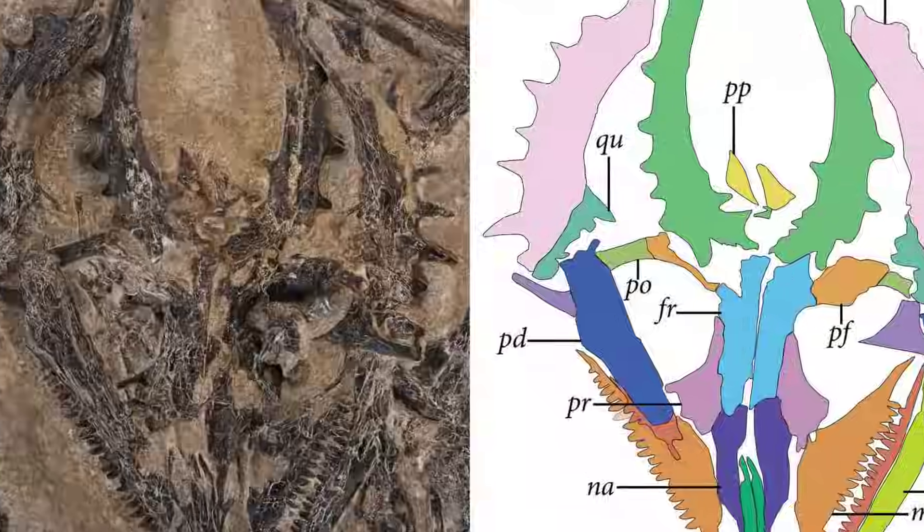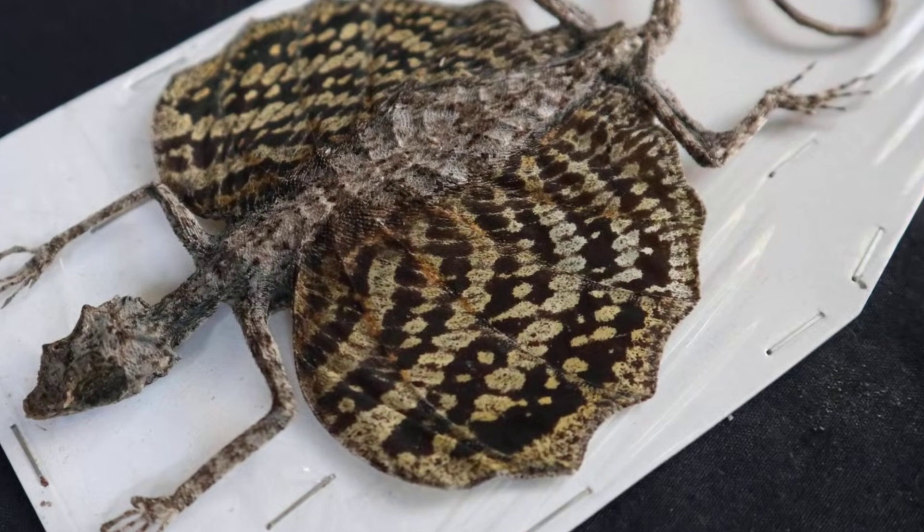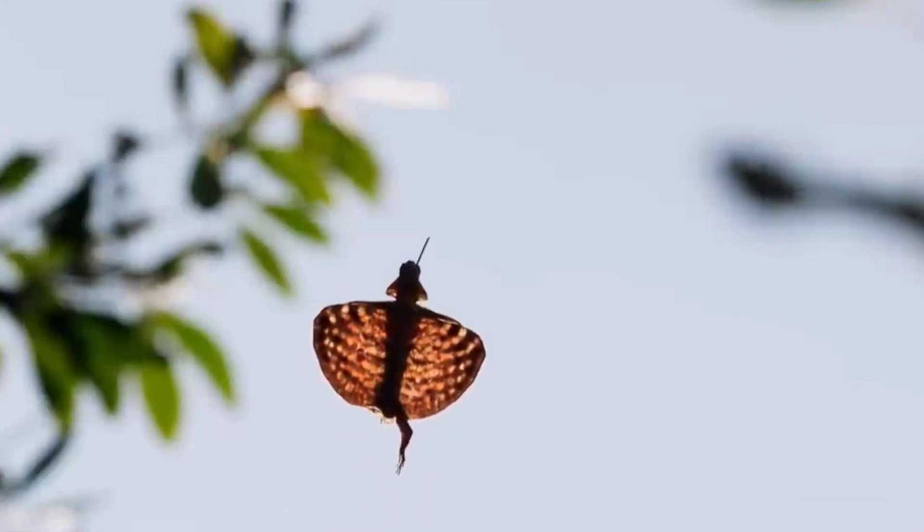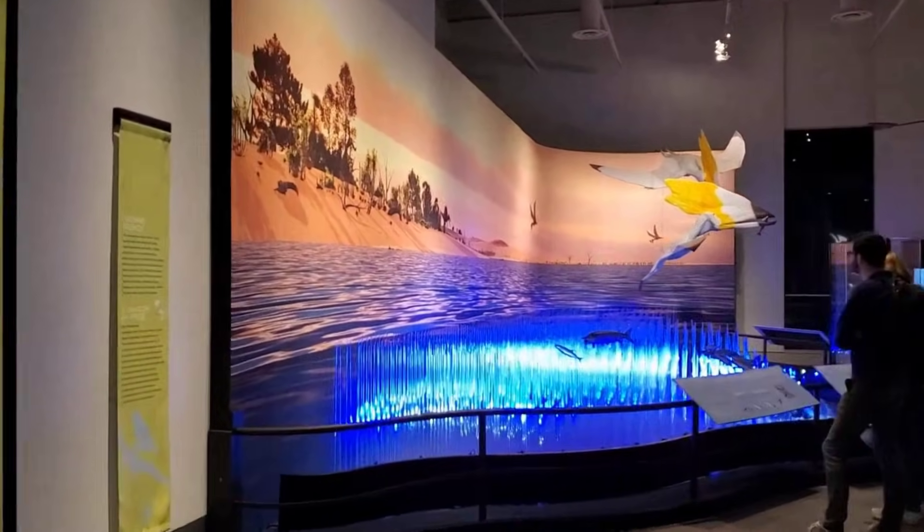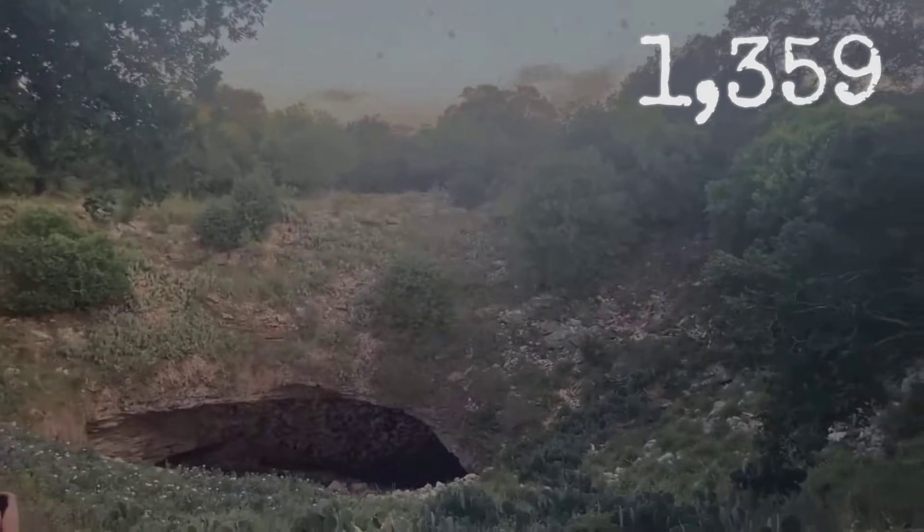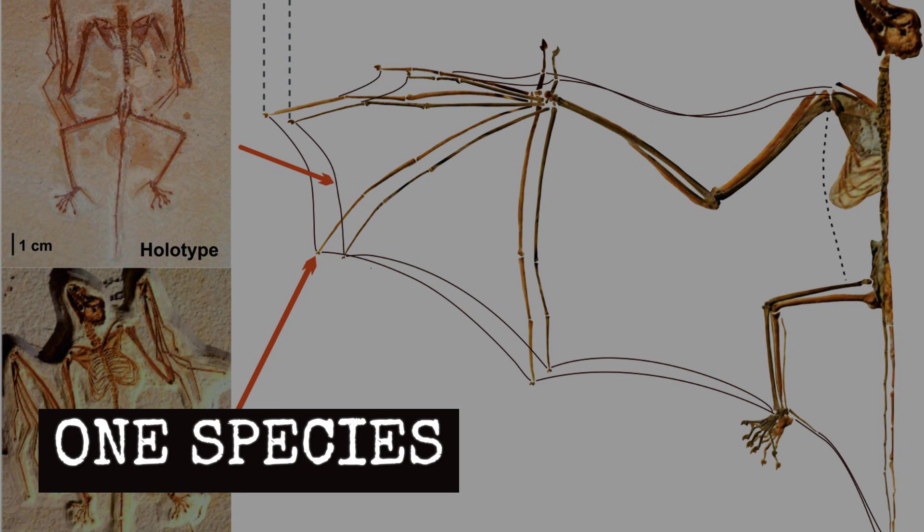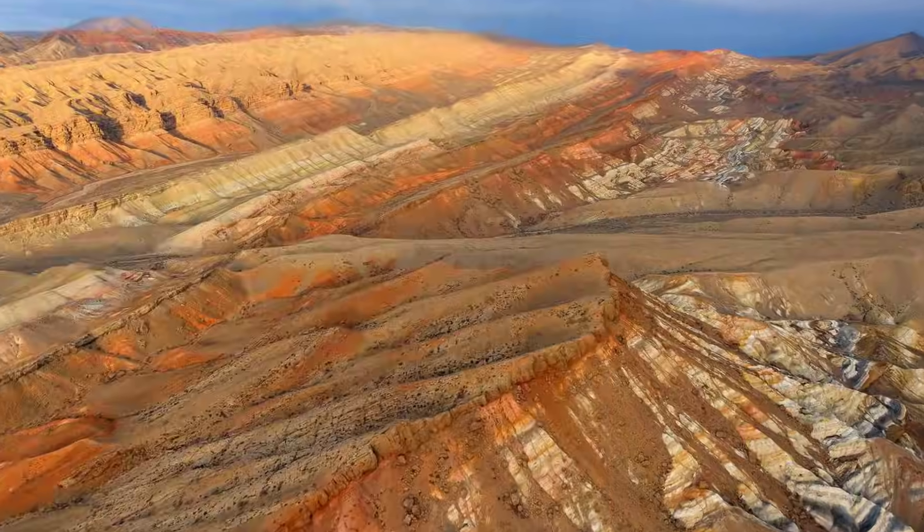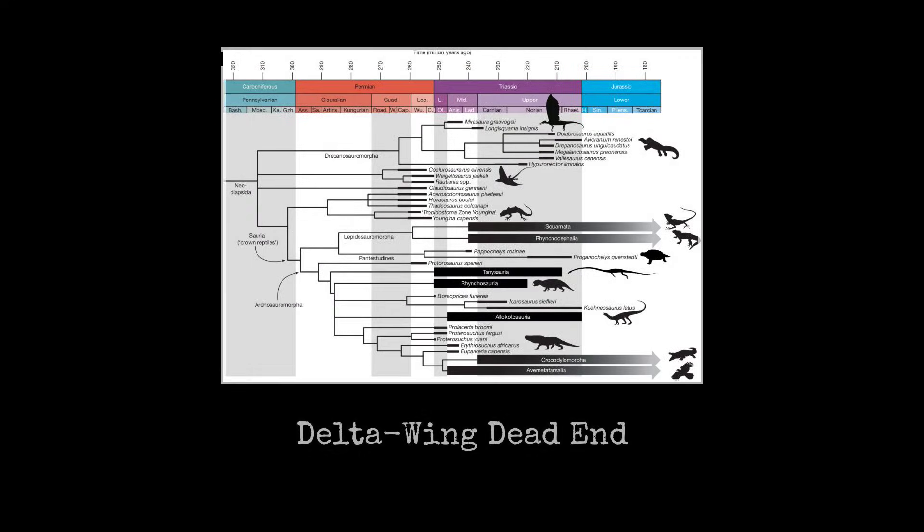The fossil record confirms this. One specimen ever found. Compare that to flying lizards like Draco: we have found hundreds of fossils, living species exist today, millions of years of success. Or consider pterosaurs: thousands of fossils and dozens of species. They dominated the skies for 160 million years. Bats emerged 50 million years ago and are still thriving today, with 1,400 living species. Sharovipteryx: one fossil, one species. And then, silence. Evolution tried delta-wing reptiles with leg wings. It did not work, and it was never attempted again.